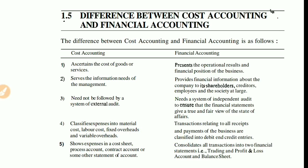Financial accounting tells you whether your business is running at profit or loss and shows the overall financial position. The second difference: cost accounting serves the information needs of management, whereas financial accounting provides financial information to shareholders, creditors, employees, and society at large.